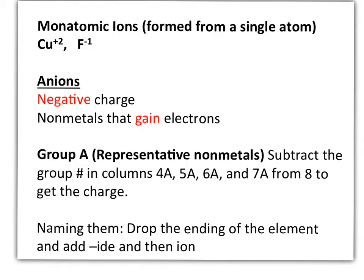Single atoms can also form monatomic ions that are negatively charged. These would be the anions, and they are nonmetals that have gained electrons. If we go back to the periodic table and we look at the Group A representative nonmetals, which are found in columns 4A, 5A, 6A, 7A, and 8A, if we subtract the group number from 8, we can get the charge of the elements within those columns.